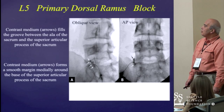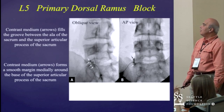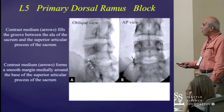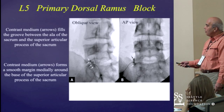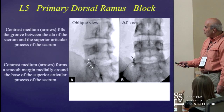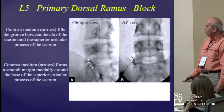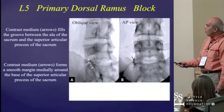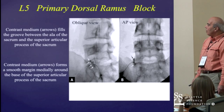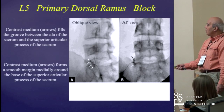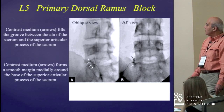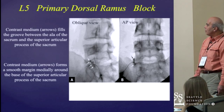These are oblique and AP view images of an L5 primary dorsal ramus block. You can see the contrast filling the groove between the ala of the sacrum and the superior articular process of the sacrum on the oblique view, and the same image on an AP view, with the contrast forming a smooth margin around the base of the superior articular process of the sacrum.